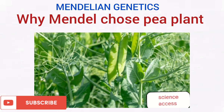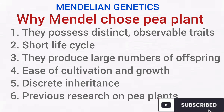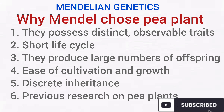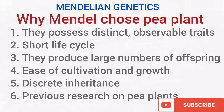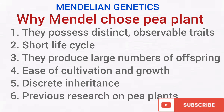Why did Mendel choose the pea plant? Pea plants possess distinct observable traits — the seed can be round or wrinkled, and some plants are tall while others are short. They also have a short life cycle, produce large numbers of offspring, and are easy to cultivate and grow. They also have discrete inheritance and can transmit characters separately. It should be noted that Mendel was not the first scientist to research pea plants — there were previous studies which he built upon.